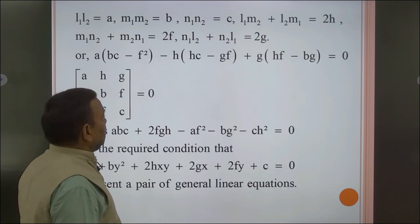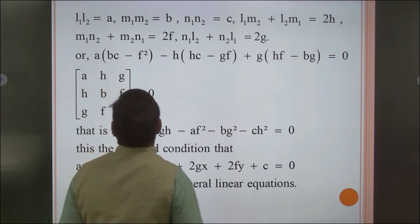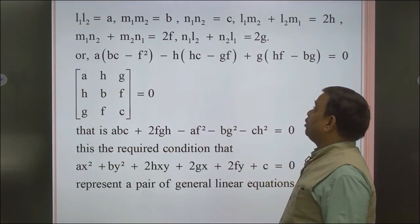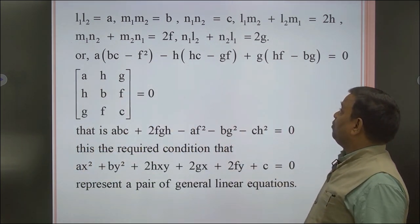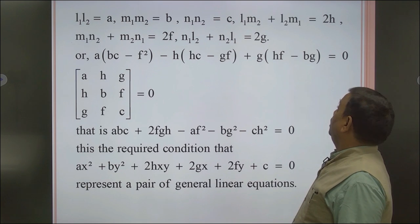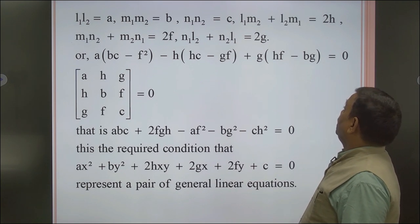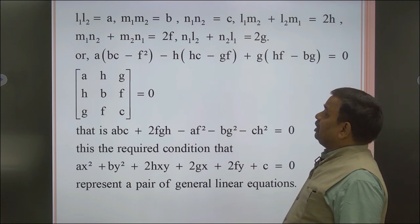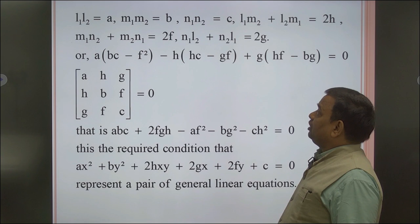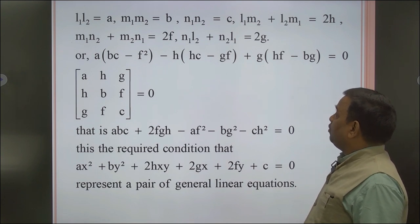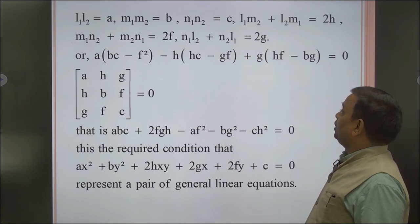From comparison: L1L2 = A, M1M2 = B, N1N2 = C, L1M2 + L2M1 = 2H, M1N2 + M2N1 = 2F, and L1N2 + N2L1 = 2G.